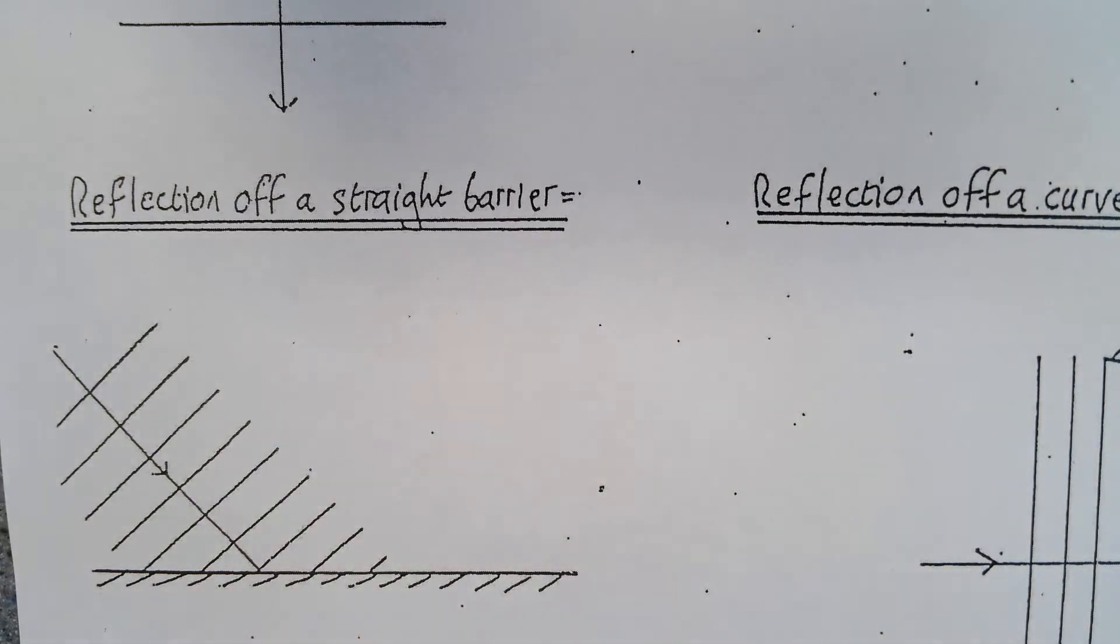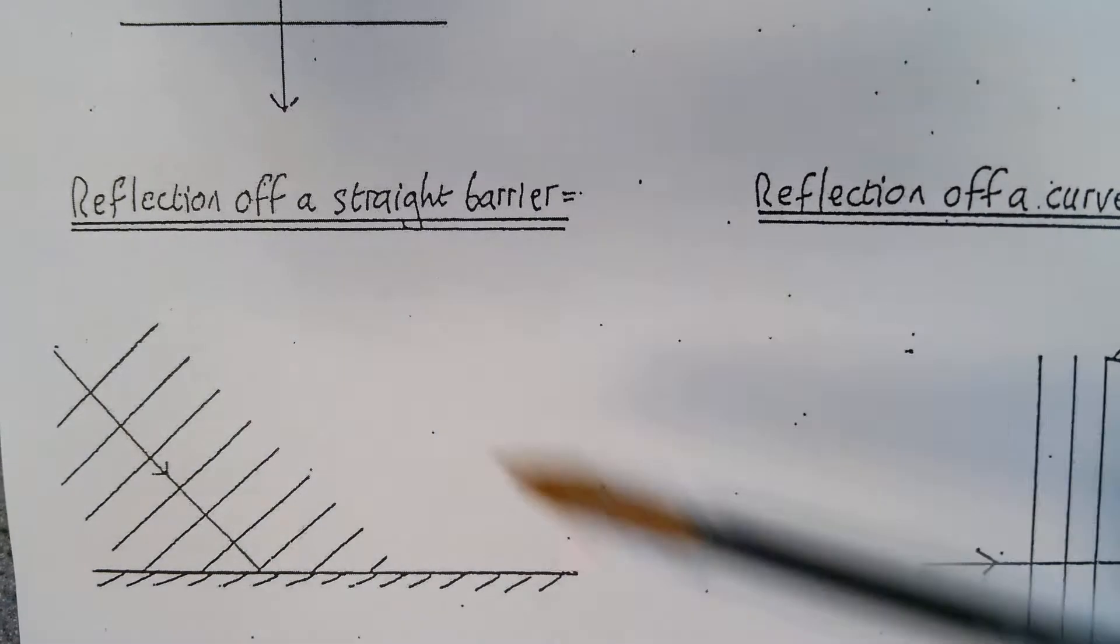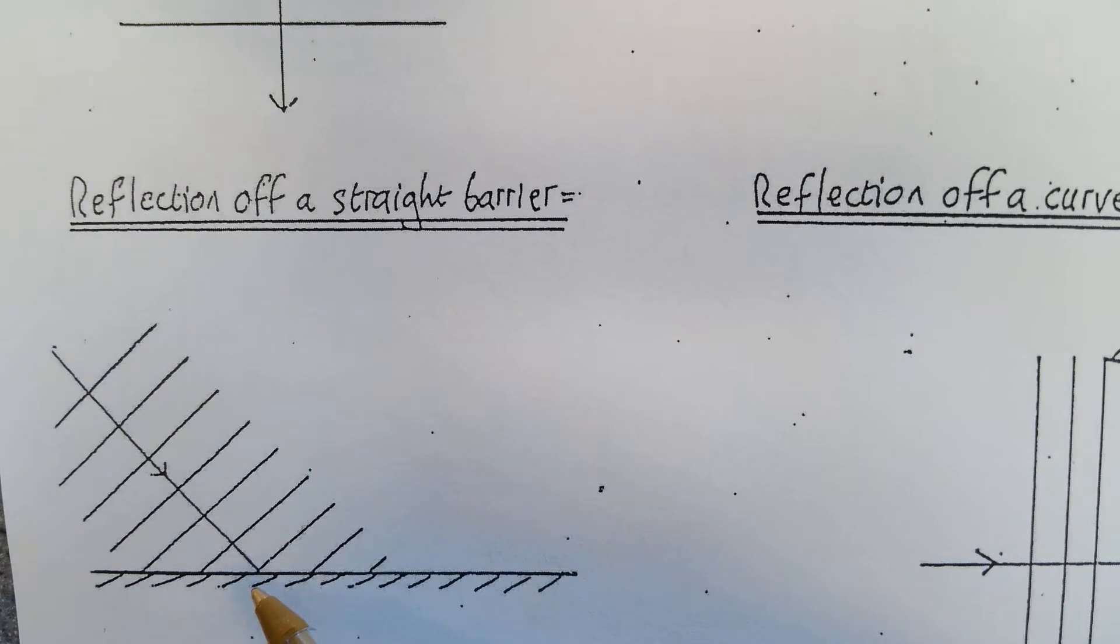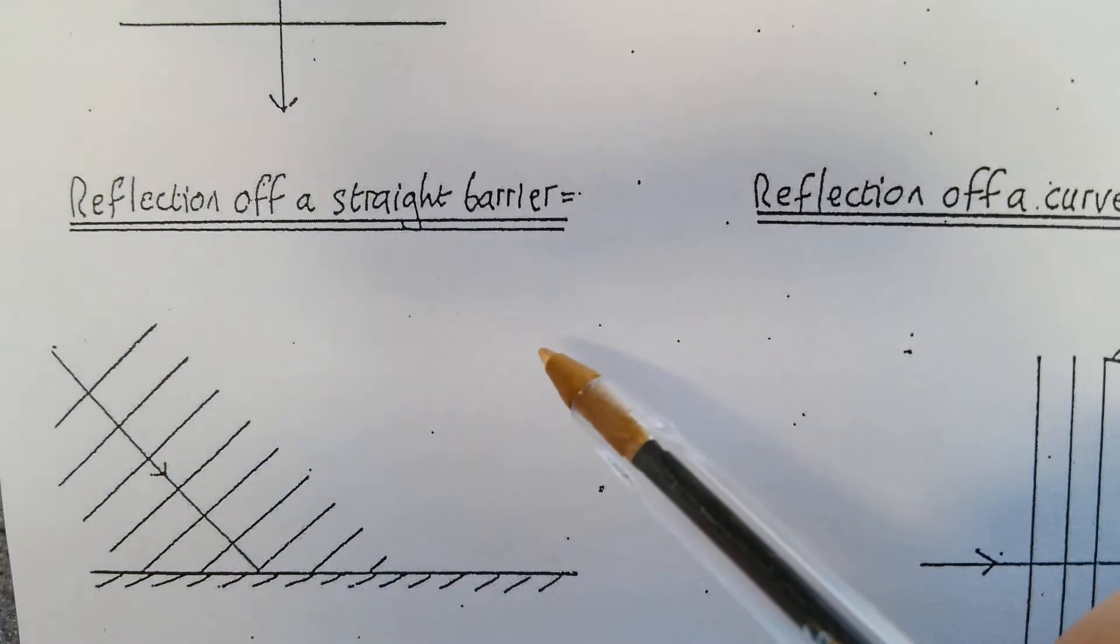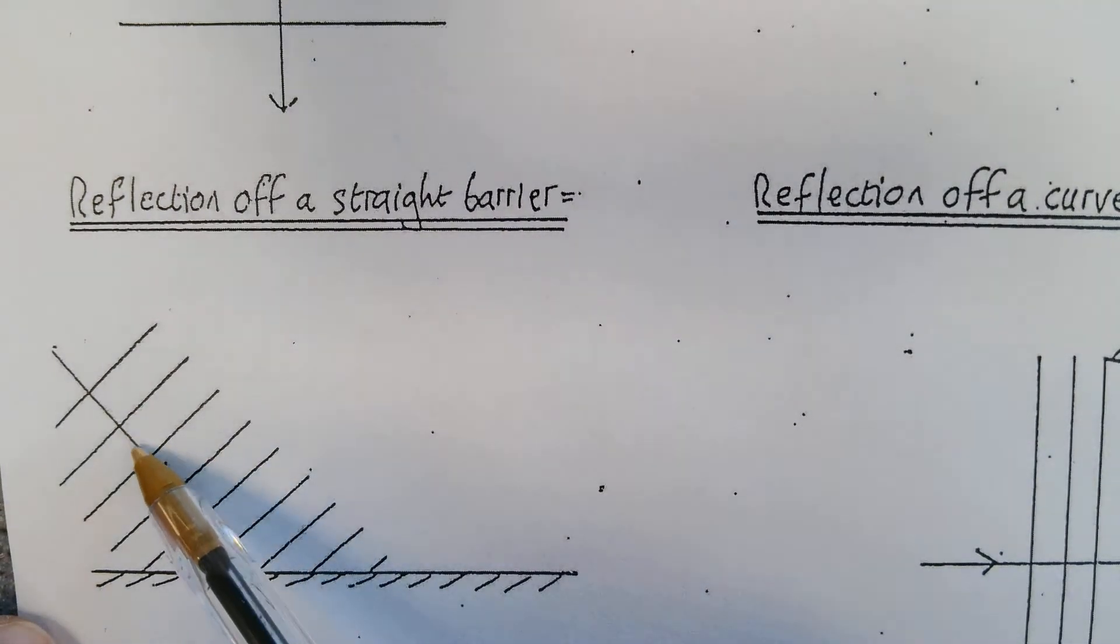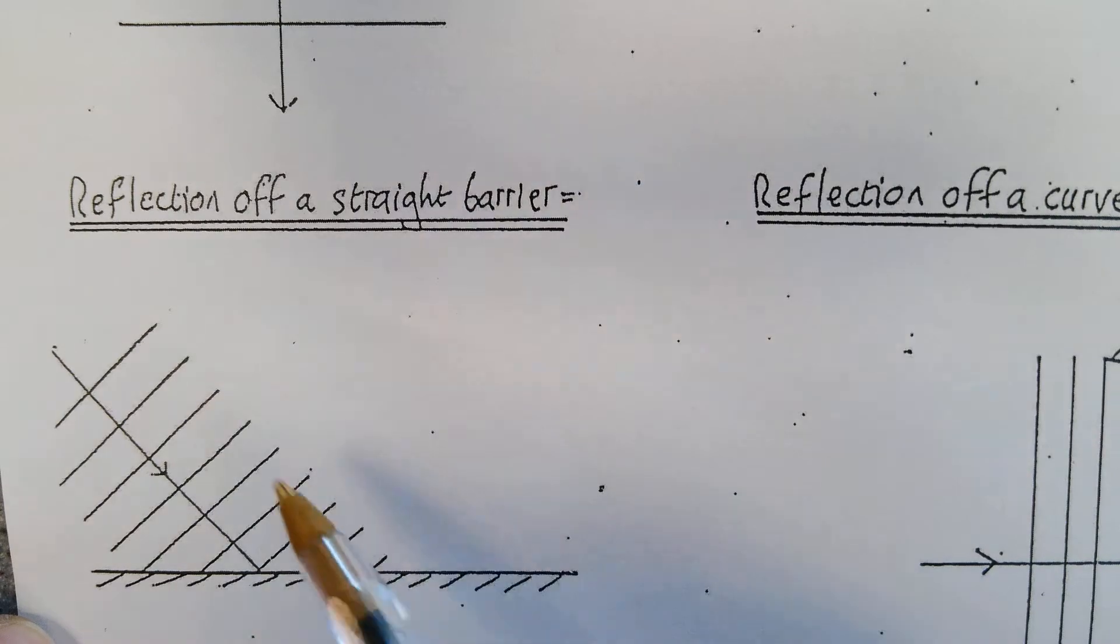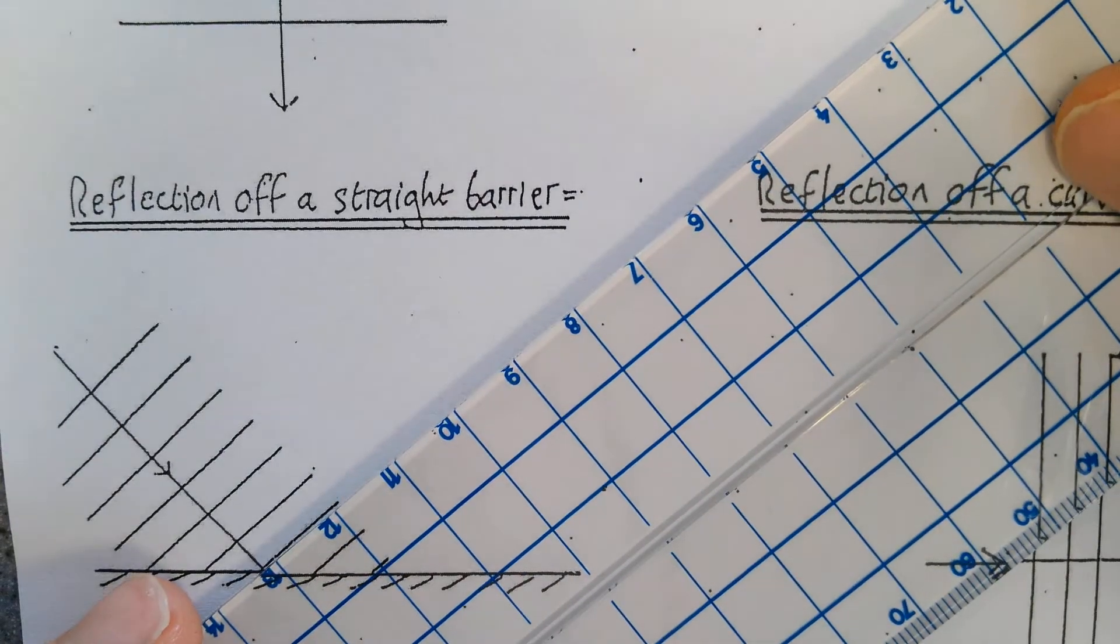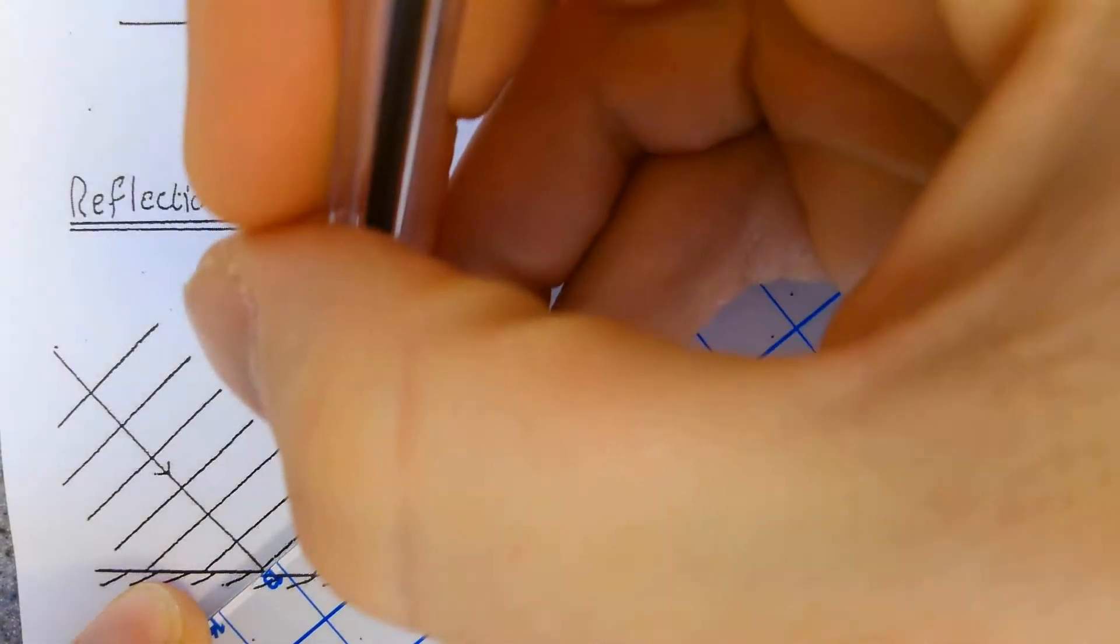So the first diagram: reflection off the straight barrier. As you can see, this is a plane wave coming in. When that reflects off, the law of reflection states the angle of incidence will equal the angle of reflection. Thankfully, this is coming at 45 degrees, it comes off at 45 degrees, making the angle here 90 degrees. So I'm just going to continue this up this way.